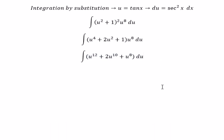Now we can get the final answer, which is u^13 over 13 plus u^11 over 11 plus u^9 over 9, and we have C as the constant.